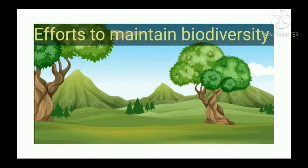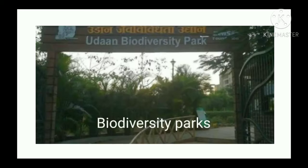Children, we already learned what is meant by biodiversity. Biodiversity means variety in living things in a particular habitat. For efforts to maintain biodiversity, we have made some parks and sanctuaries. The first one is the biodiversity park. A biodiversity park is an area which is reserved for the purpose of protecting and conserving the biodiversity of a region. Biodiversity means variety in plants and animals.